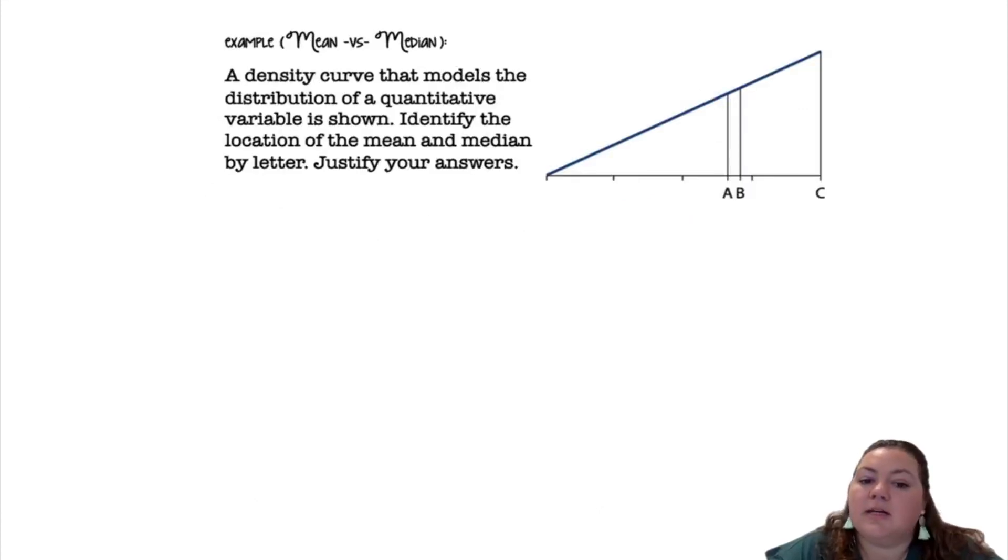Mean versus the median. A density curve that models the distribution of quantitative variables is shown. Identify the location of the mean and the median by letter. So this looks to be skewed left, which is skewed towards the lower number, so it's going to pull the mean lower. The median is resistant to outliers and skewness, but the mean is not.